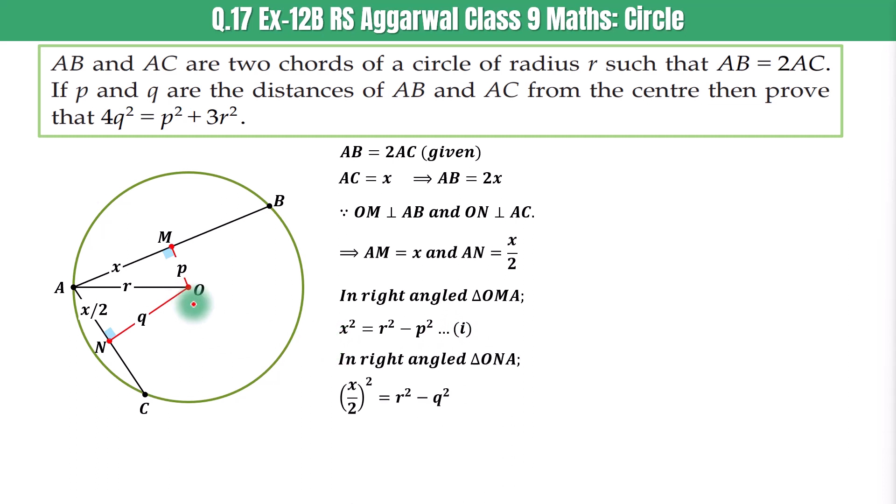And in right angle triangle ONA, X by 2 whole squared is equal to R squared minus Q squared using Pythagoras theorem. This implies X squared by 4 is equal to R squared minus Q squared. Upon multiplying both sides by 4, we get X squared is equal to 4R squared minus 4Q squared. This is our equation 2.